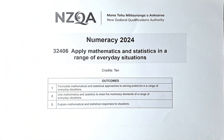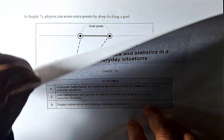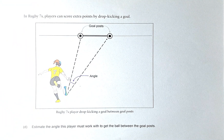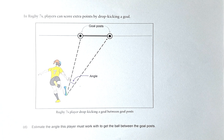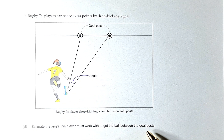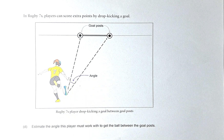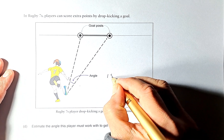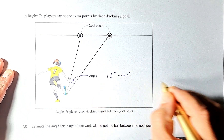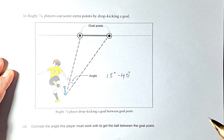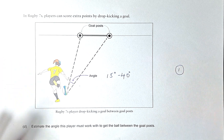Let's do questions 5D, 5E and 5F. Starting with 5D: in Rugby 7, players can score extra points by drop kicking a goal. Estimate the angle this player must work with to get the ball between the two goalposts. The answer for this paper question can be anything from 15 degrees to 40 degrees. If you answer anything between 15 and 40 degrees, that will give you outcome number 1.